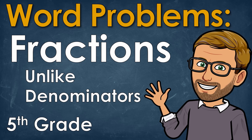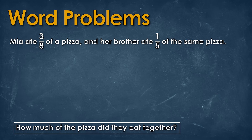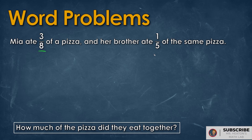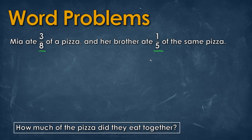In this video we're going to be solving fraction word problems using unlike denominators. First thing you always want to do is read the problem. We see that Mia has eaten 3 over 8 of a pizza and her brother has eaten 1 over 5 of the same pizza. How much of the pizza did they eat together? The word 'together' tells us that we're going to be adding these two fractions.